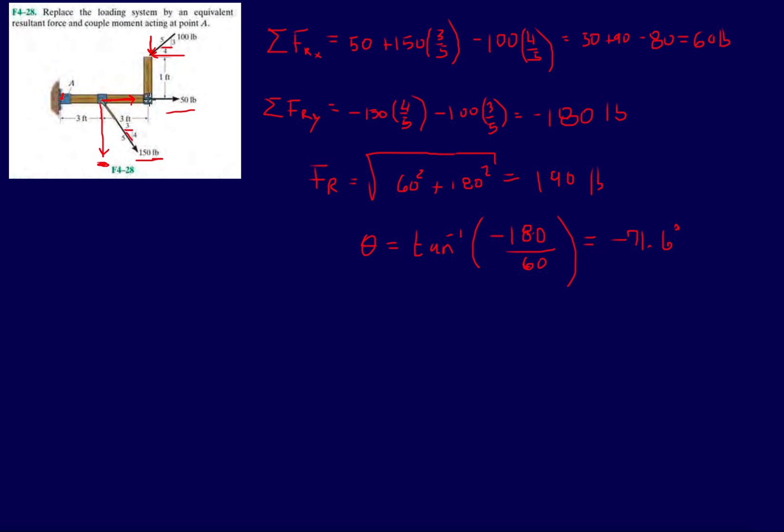Right away, let's look at the bottom two forces, the 150 and the 50. This 50 pound force, extend its line of action and it intersects A, so no contribution there. The X component of this 150 pound force, extend its line of action and it intersects A, so we don't need to take the moment contributed to A from those two forces.